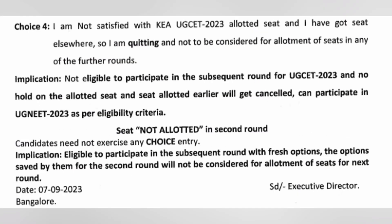Choice 4: I am not satisfied with the KCET allotted seat and I have got a seat elsewhere — I am not to be considered for allotment of seats. Those students are going out of counseling; they just select Choice 4 and exit. For students with no seat allotted, they do not need to exercise any choice entry because their entries will be automatically taken to the next round. They are eligible to participate in a fresh option entry; the options saved in the second round will not be considered and they can do a fresh option entry without needing to submit a choice entry.